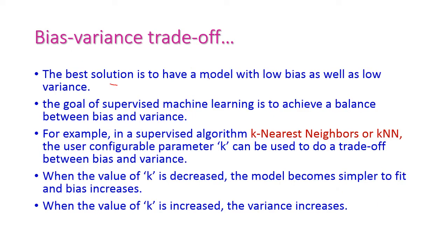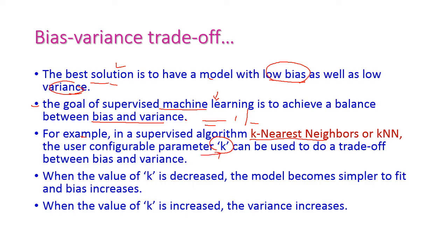The best solution is to have a model with low bias and low variance. If there is low bias and low variance, then only the model will be the best one. The goal of supervised machine learning is to achieve a balance between bias and variance — if bias increases then variance decreases, and if variance increases then bias decreases. For example, take the KNN algorithm — K nearest neighbor algorithm — where the configurable parameter is K, the number of nearest neighbors, which can be chosen to trade off between bias and variance.